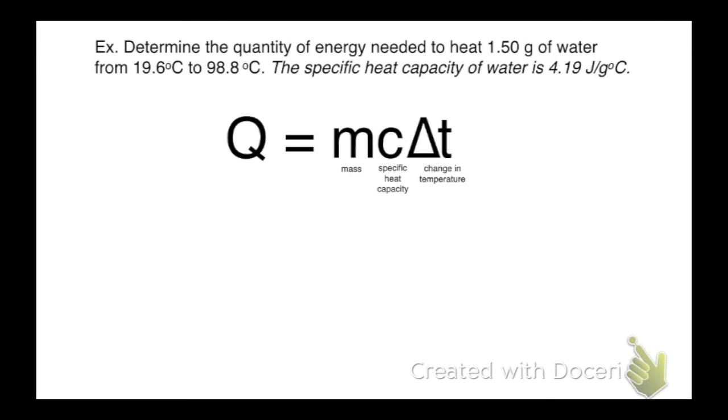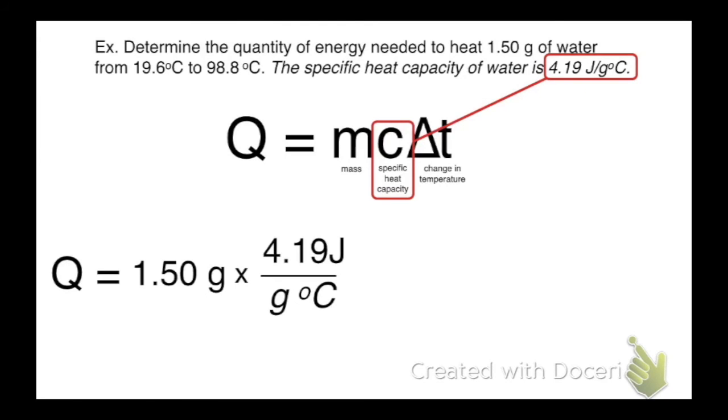So let's look at this question. It says, determine the quantity of energy needed to heat 1.5 grams of water from 19.6 to 98.8 degrees Celsius. The specific heat capacity of water is 4.19 joules per gram degree Celsius. Okay, so first of all, Q equals M, which is the mass, 1.50 grams of water. And I'm going to times that by the C, which is 4.19 joules per gram degree Celsius. And make sure you put down all your units. I need the J, the g, and the degrees Celsius. We need to have all the units.